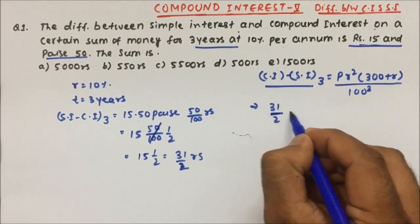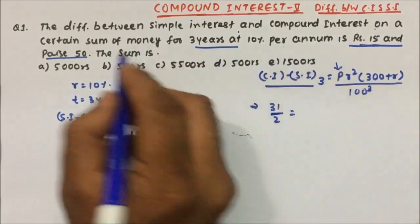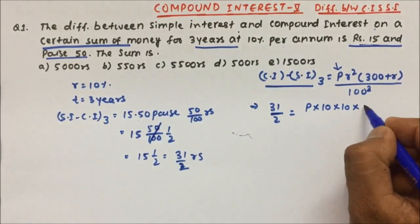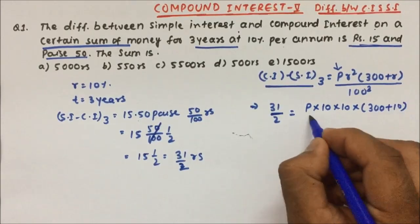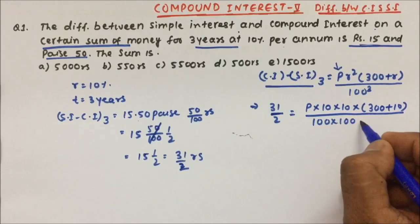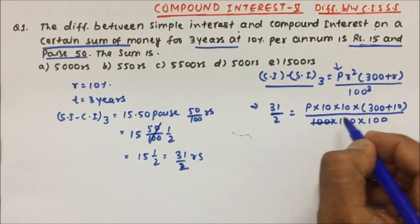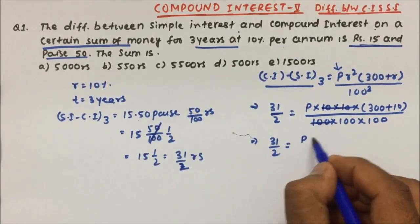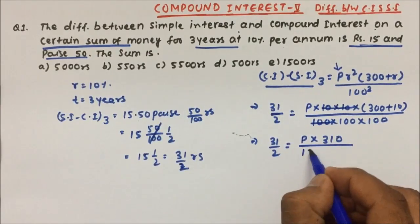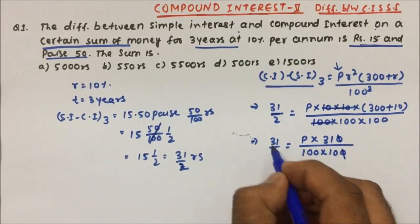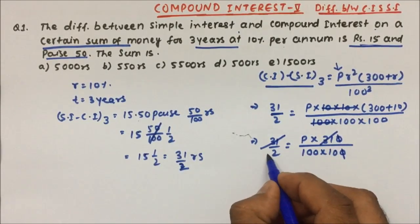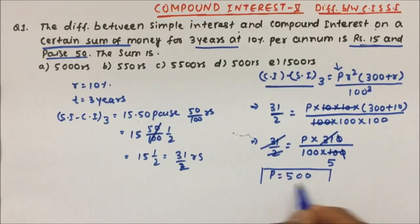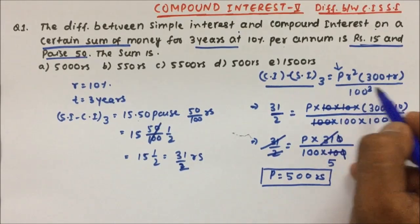The difference is 31/2 rupees and we have to calculate the principal. Substituting: rate is 10, so 10 × 10, and (300 + r) = 310, divided by 100 × 100 × 100. Cancelling — 10 cancels with 100, 31 cancels with 31, and 2 cancels with 10 giving 5 — the principal comes out to 500 rupees.